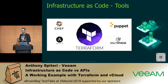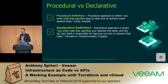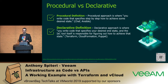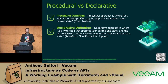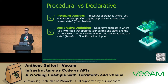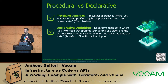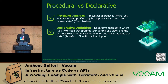Terraform is created by a company called HashiCorp. Before we dive in, it's important to understand the differential between procedural and declarative, because this defines the difference between some of those tools. Procedural is basically when you write code that specifies a step-by-step action to achieve a desired state — Chef and Ansible are examples. Declarative is an approach where you write code that specifies your desired end state, and the IaC tool is responsible for achieving that state. Terraform, CloudFormation, and Puppet are examples. It's basically about what the end goal is and how it's achieved.